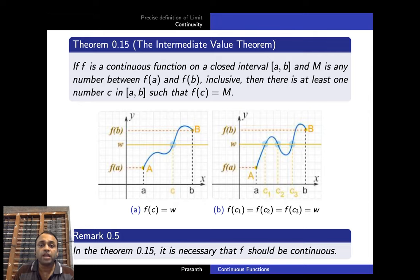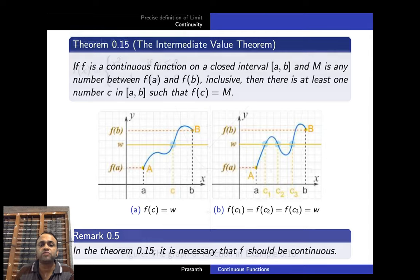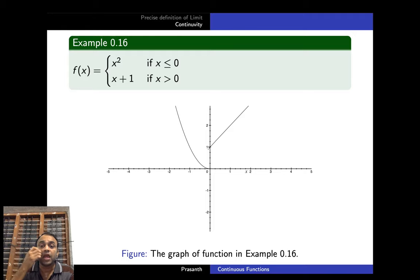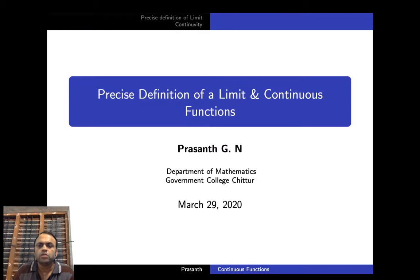Remember that the continuity of the function is absolutely necessary for the Intermediate Value Theorem to hold. Otherwise we have the following counterexample: f(x) = x² when x ≤ 0 and f(x) = x + 1 when x > 0. This function is clearly discontinuous, and you can see that the function does not attain certain intermediate values.